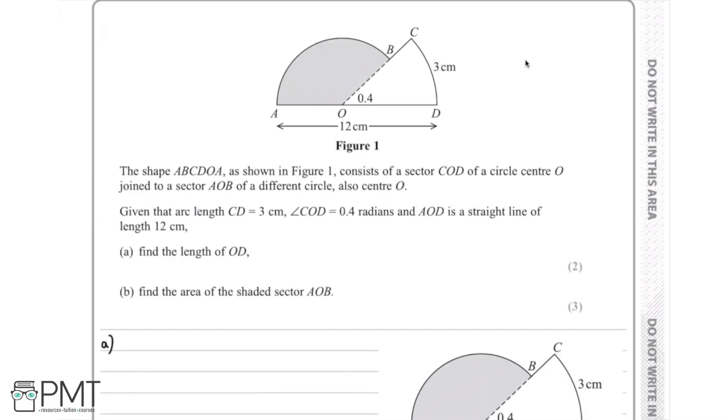In this question we have a shape which is made up of a sector of a circle joined to a sector of a different circle. First, highlighted in yellow, we have the sector COD, and in green we have the sector AOB. They're both from different circles. We're given a few measurements, and we're going to use this to help us solve question (a), which is to find the length of OD.